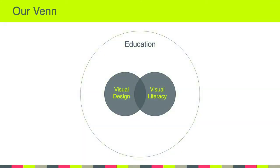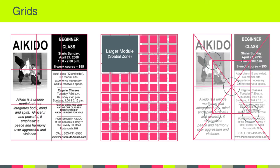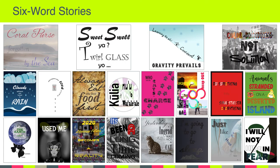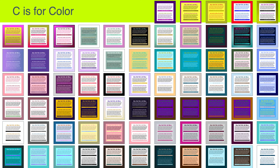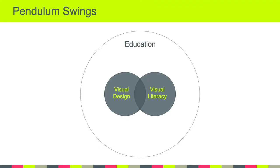If we take a look at our class Venn diagram, the past couple of weeks it's pretty clear we've been squarely on the left side focusing mostly on visual design. We've been talking about grids and grid systems. We've been experimenting with typographic hierarchy and typographic expression. And of course we've been learning the nuances of messing around with color.